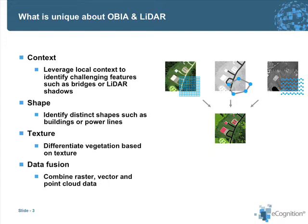Texture is another of those features. For example, vegetation is an area where texture can be used quite effectively. And then, last but probably one of the most important aspects is the aspect of data fusion.